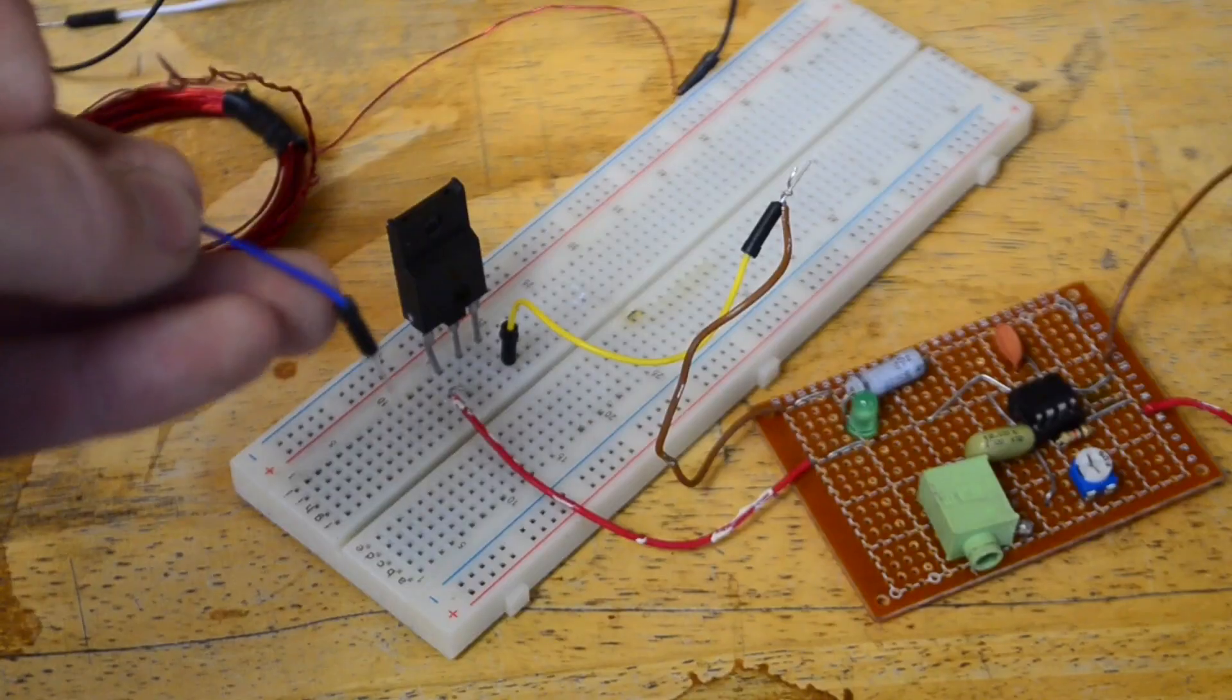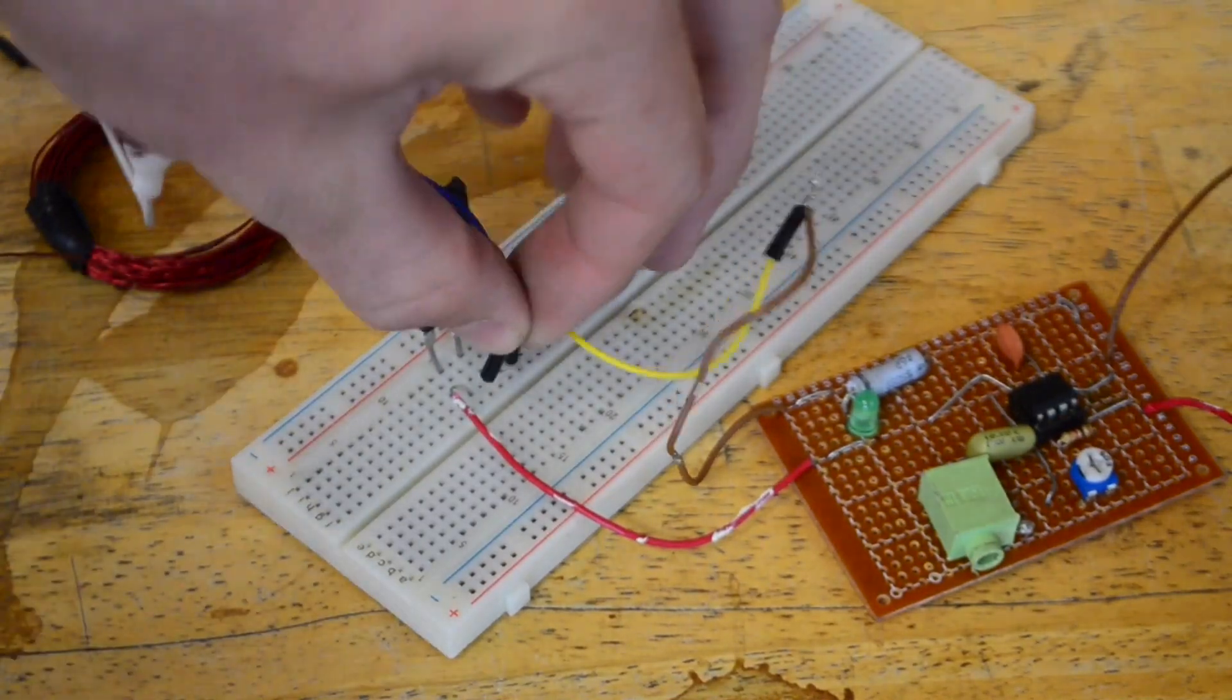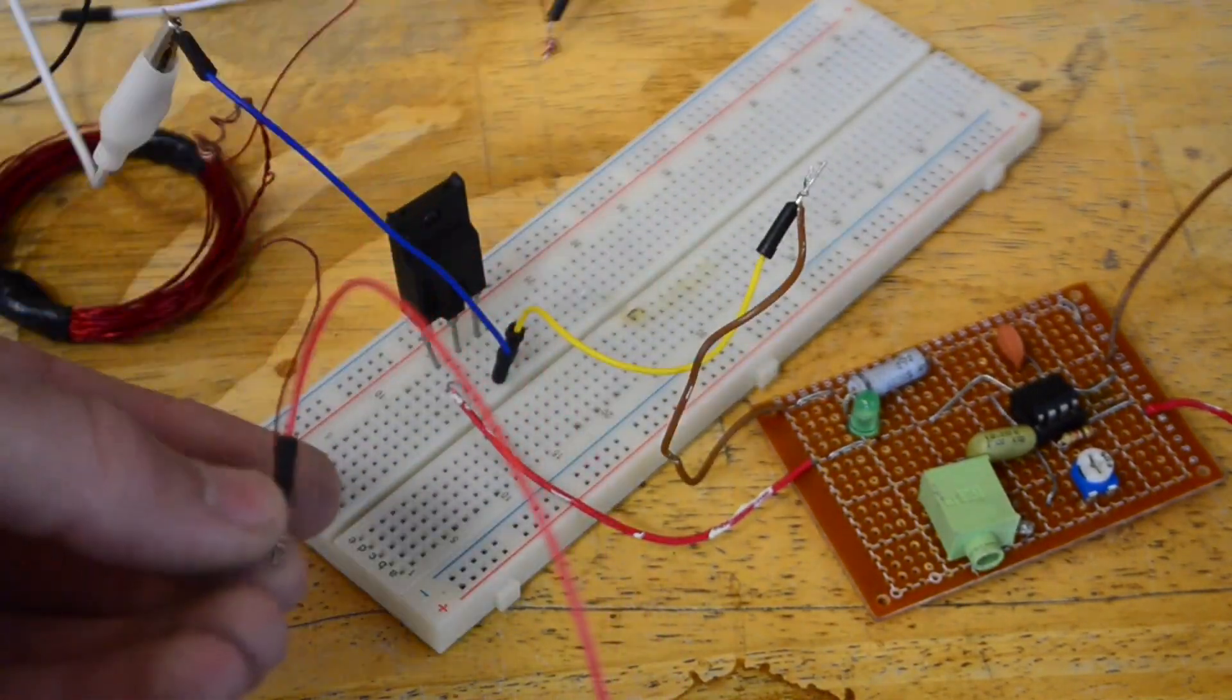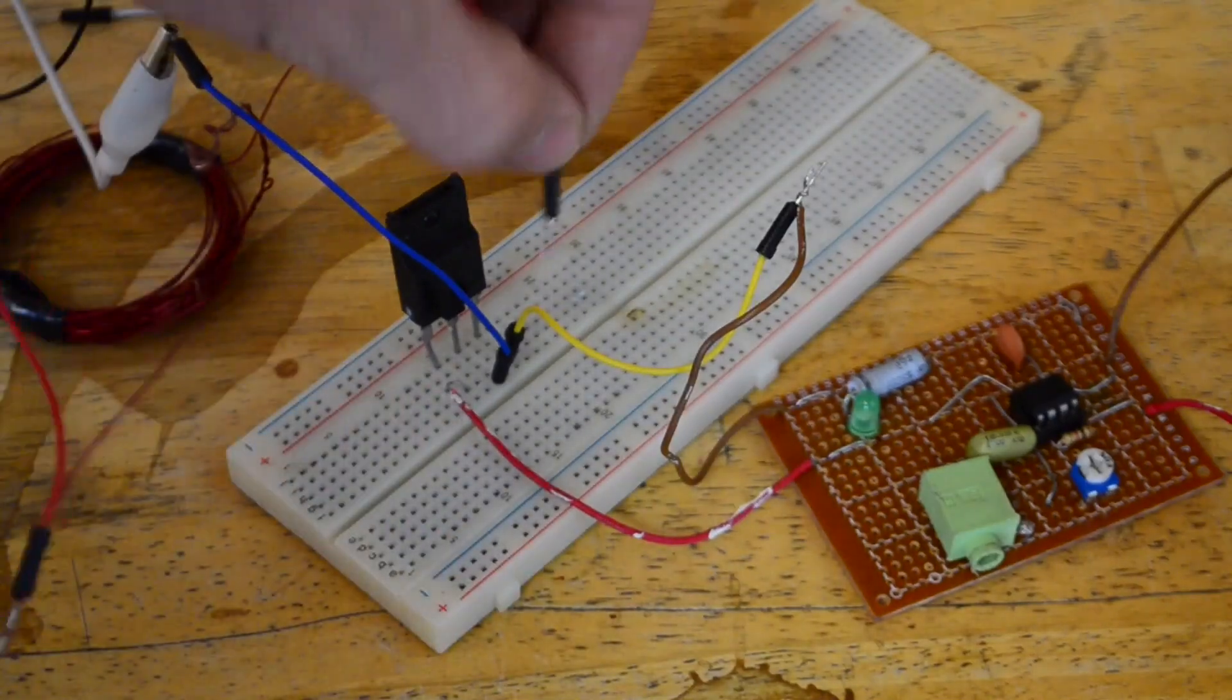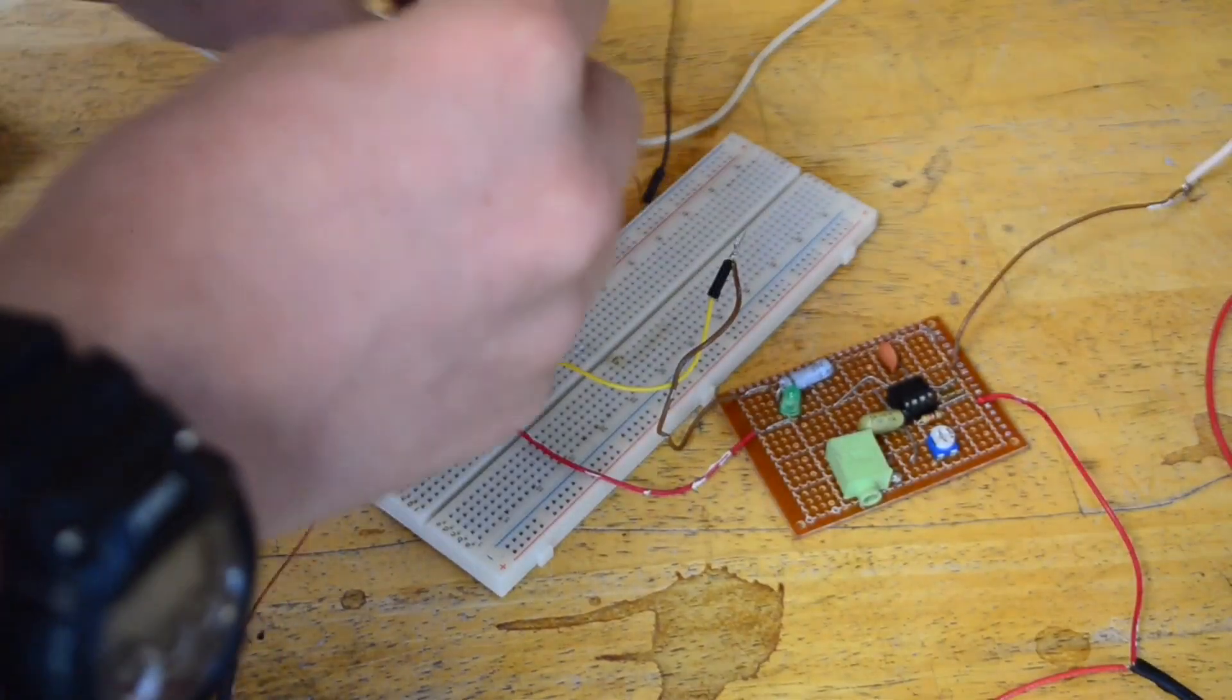Now we can take that coil and just ignore the center tap part and connect the two ends to the MOSFET. I'll take a separate DC voltage from the one powering the power supply and connect it to the collector. Then this end of the coil connects to the emitter, and the other end connects to the ground of this power supply.